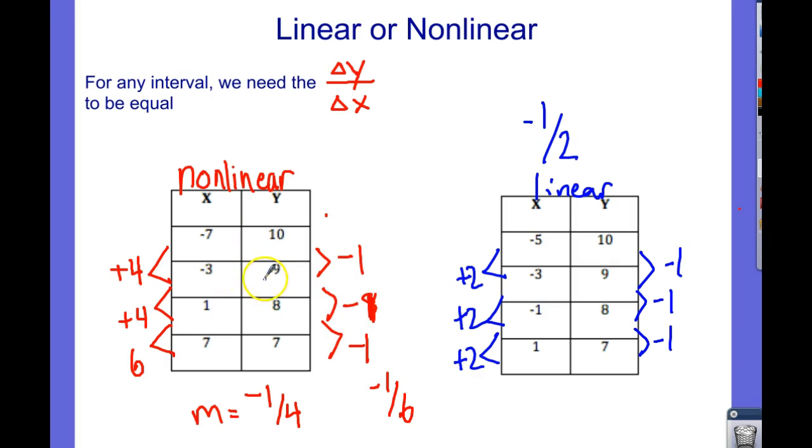And make sure that you check each interval because something like this could happen. If I were to just check these first two, I would have said, okay, negative 1 over 4, negative 1 over 4. That looks good enough, so linear. But if you check this last one, that's when you realize it's nonlinear. So, make sure you check them all.